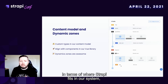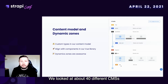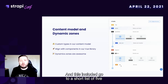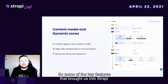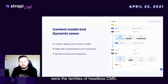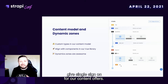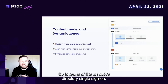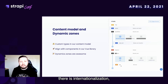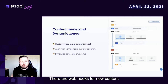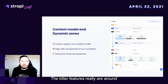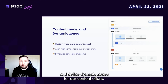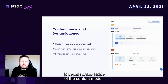In terms of where Strapi fits in our system, we've also got some beautiful content in there. We looked at about 40 different CMSs before landing on Strapi, including going to a short list of five and then doing proof of concepts with only three of them. Some of the key features that brought us to Strapi were the fact that it's a headless CMS, has a GraphQL API, gives single sign-on for our content authors via active directory, there is internationalization, webhooks for new content, and it's open source and uses a very similar stack to the engineers we've got in-house. The killer features were around being able to define custom content types and dynamic zones for our content, so we can put good guardrails around content but still allow some freedom inside the content model.